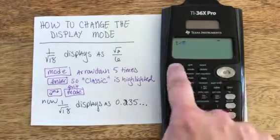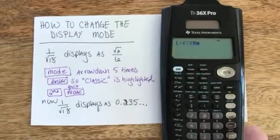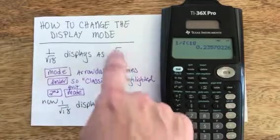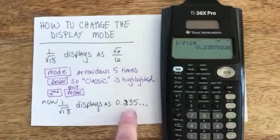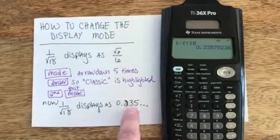One divided by the square root of 18. And instead of seeing that simplified, rationalized denominator format, I can get just the decimal value. I shortened it off in my notes.